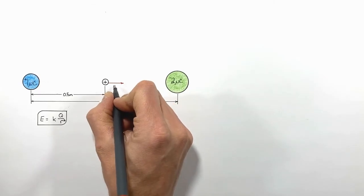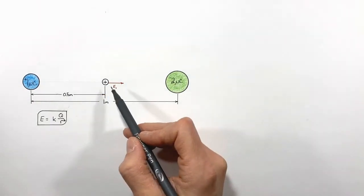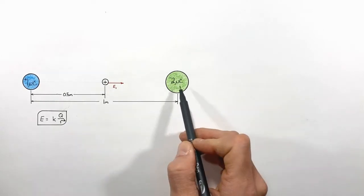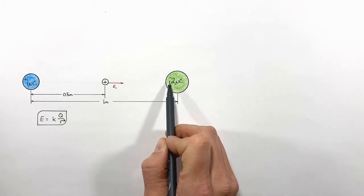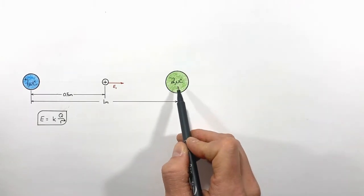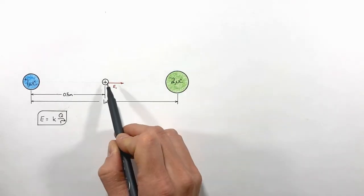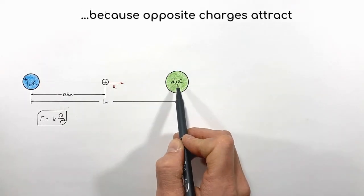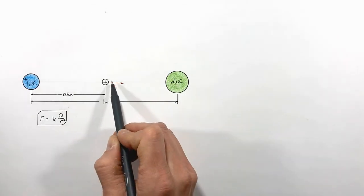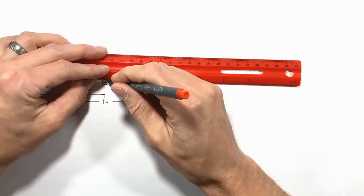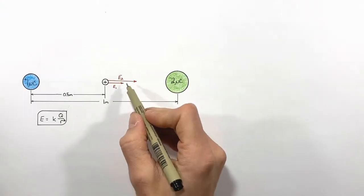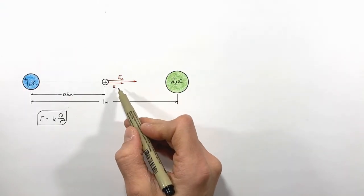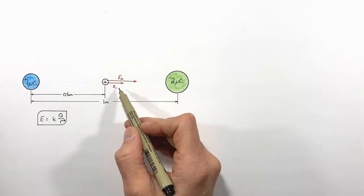I'm going to call this the electric field from charge one. There's also going to be an electric field from this two micro coulomb charge, but realize this two micro coulomb charge is negative. When you have a positive test charge close to a negative charge, those charges are going to be attracted. So this negative charge is going to produce an electric field that is also to the right — I'll call that the electric field from charge two. These electric fields are vectors, so we simply add them together to get the total electric field.